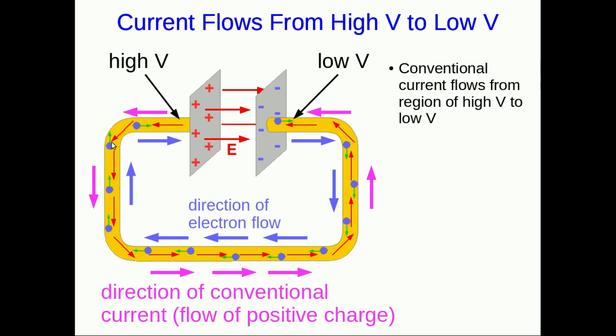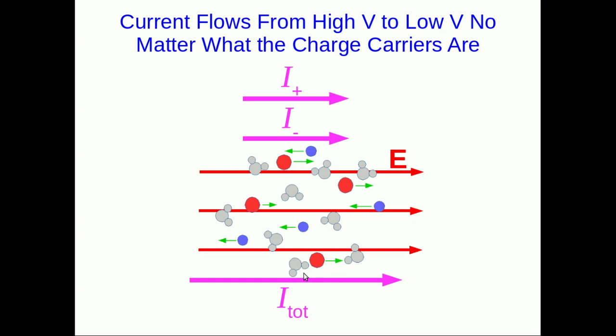This is one of the reasons it's more convenient to think in terms of conventional current. If you think in this analogy of potential as being like height, then it's convenient that conventional current goes from high to low, just like something rolling down a hill in the analogy. Also note, the electric field points from high potential to low potential. And so that means conventional current always flows in the direction of the electric field.